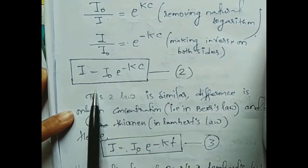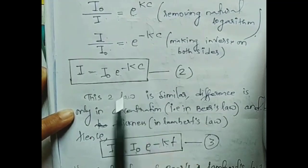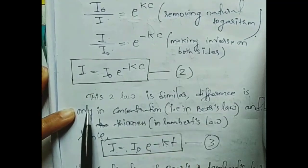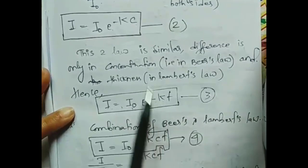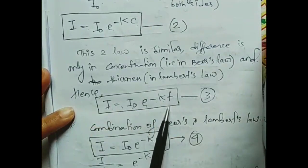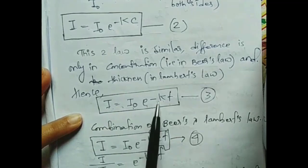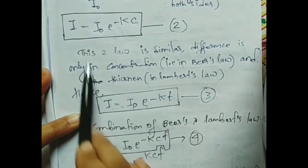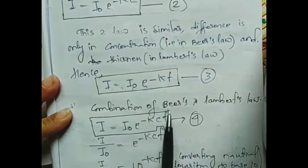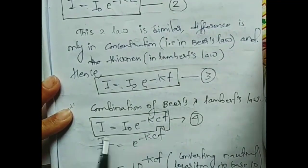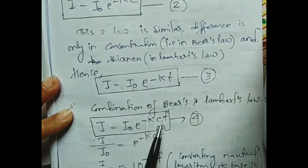Now for Lambert's law — the derivation is very similar. The only difference is that Lambert's law talks about the thickness of the cuvette. Therefore, instead of concentration, we use T for thickness. So Lambert's law gives I equals I naught e to the power minus KT. The combination of Beer's and Lambert's law is: I equals I naught e to the power minus KCT.